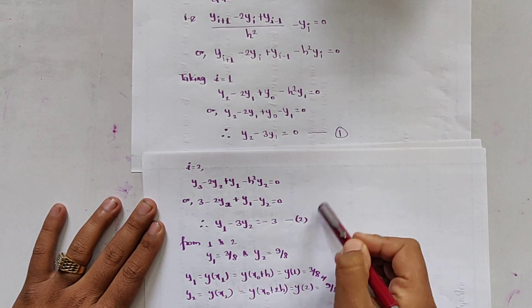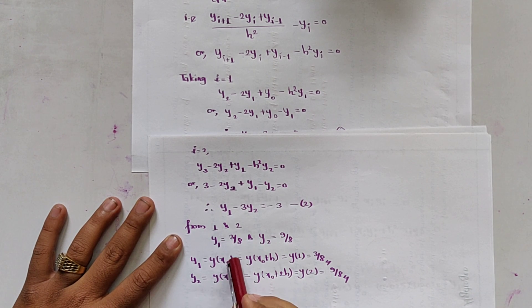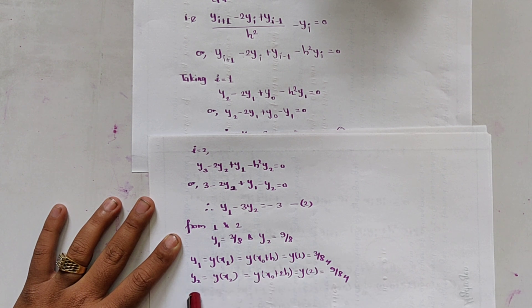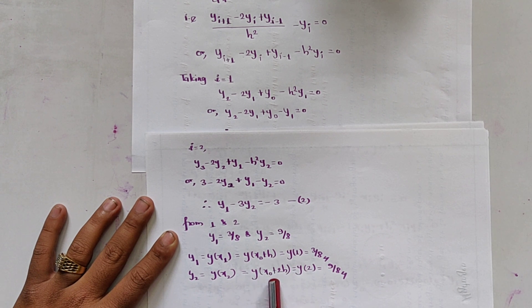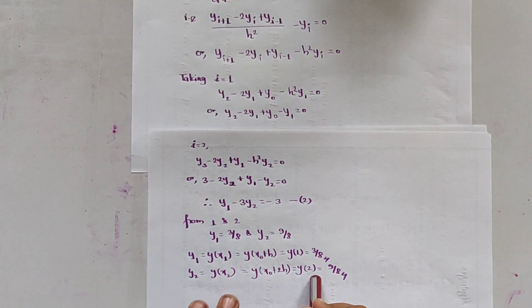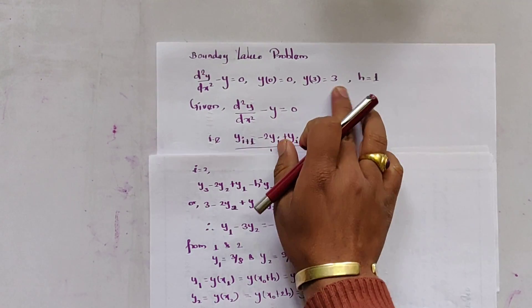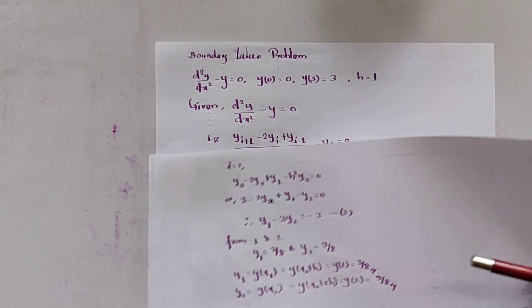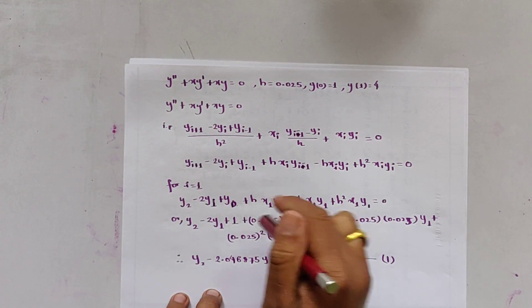Solving equations 1 and 2 together, we get y_1 = 3/8, that is y(x_1) = y(x_0 + h) = 3/8. Similarly, y_2 = y(x_0 + 2h) = 9/8. In this way we have solved the differential equation using the finite difference method.